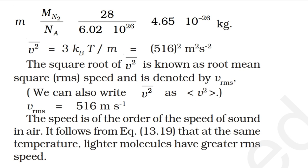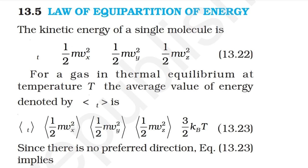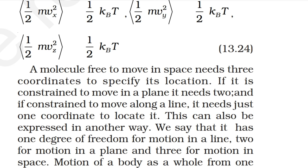Law of equipartition of energy: the kinetic energy of a single molecule is (½mvx²) + (½mvy²) + (½mvz²). A molecule free to move in space needs three coordinates to specify its location. If constrained to move along a line, it needs just one coordinate; if constrained to move in a plane, it needs two.